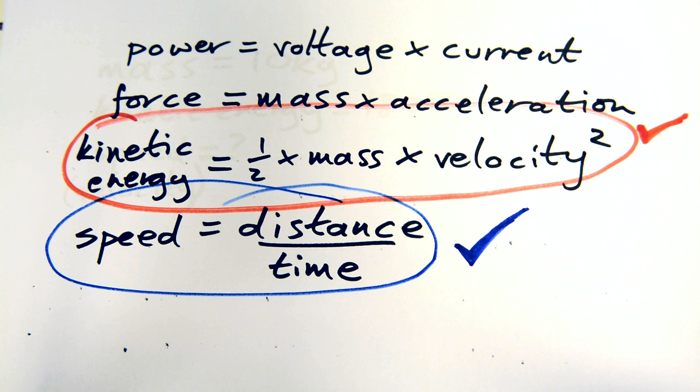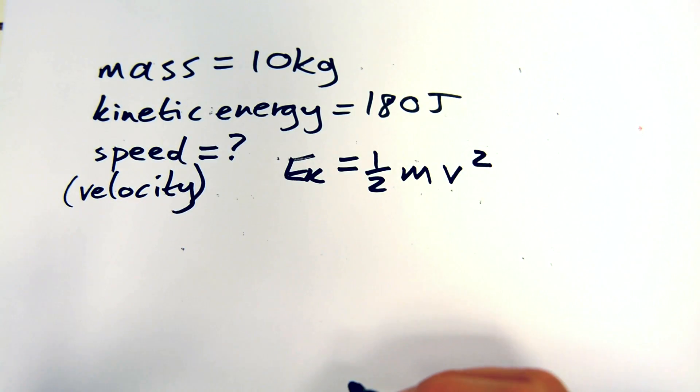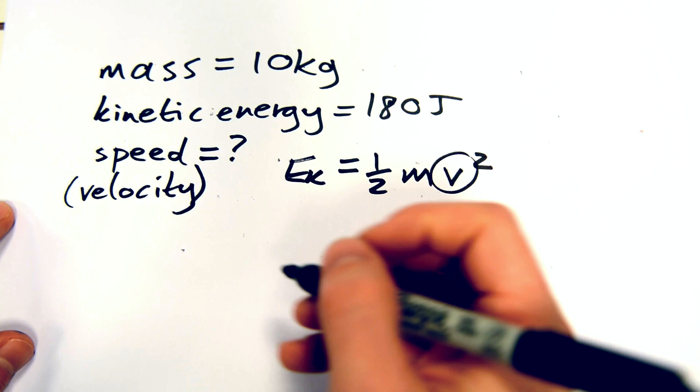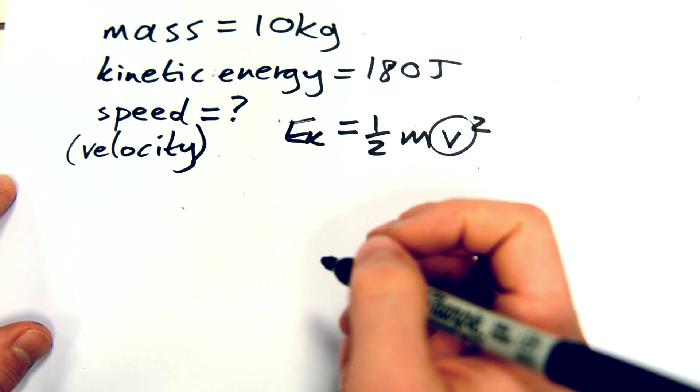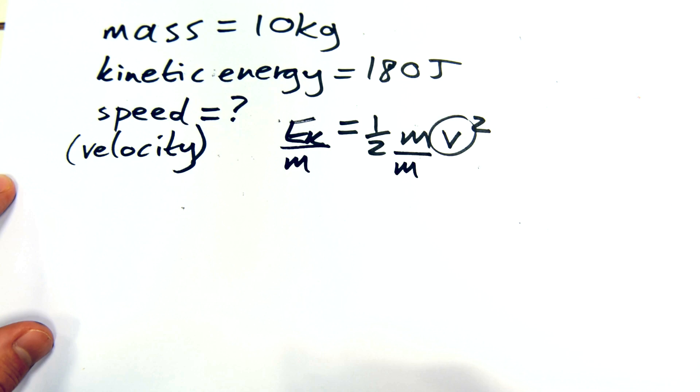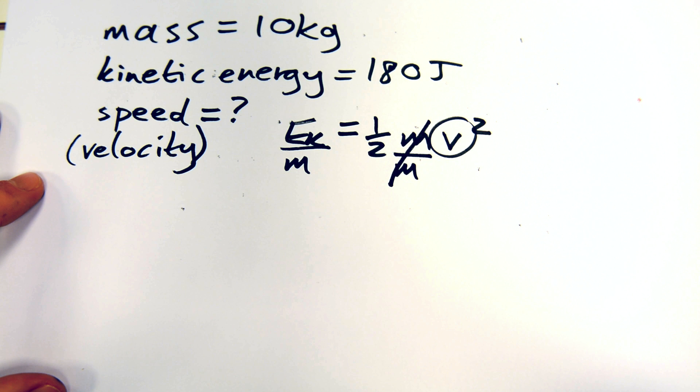So we need to move the half and the m to the other side of the equation to leave v on its own. Make sure that when you rearrange, write down each step to minimize the chances of making mistakes. Okay, so to do this we need to remember that whatever we do to one side of an equation, we need to do the same to the other side as well. To get rid of m off the right hand side, we need to divide the whole equation by m. This way, the m's cancel each other out on the right hand side and only leave m on the left hand side.